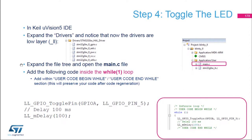Now we're going to add some code to main.c. In the main function, look for the while loop — the user code while section — and add two lines of code like we added in the blink example previously. In the blink example we had the HAL function to toggle the pin; now we have a function using the low layer drivers for doing the same thing, plus an LL function to create a delay of 100 milliseconds.